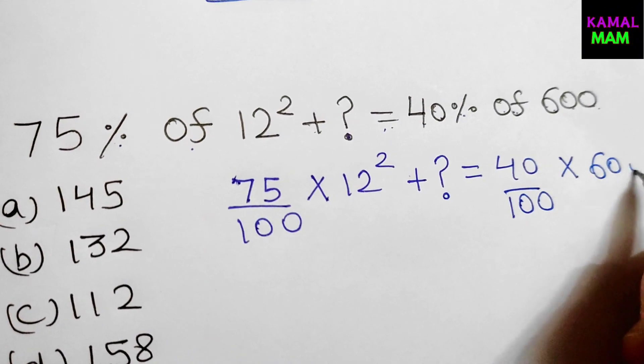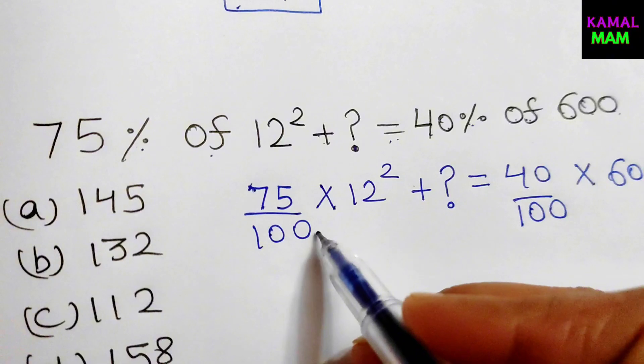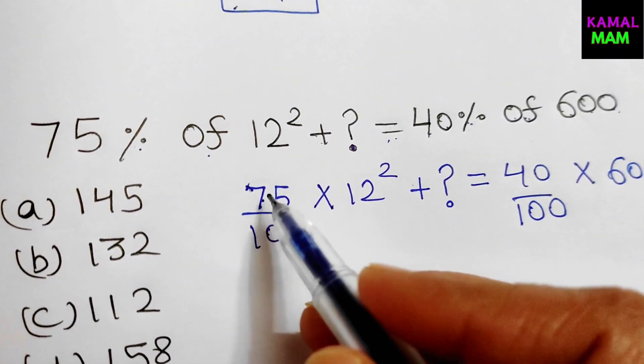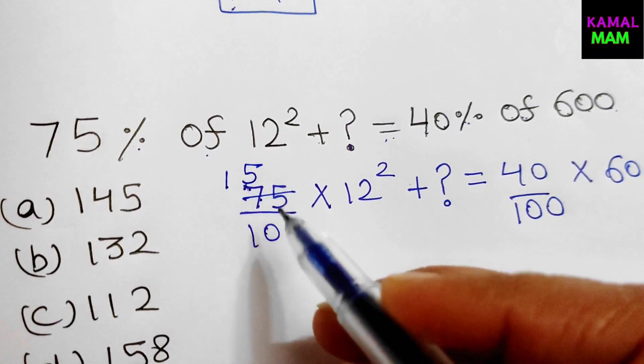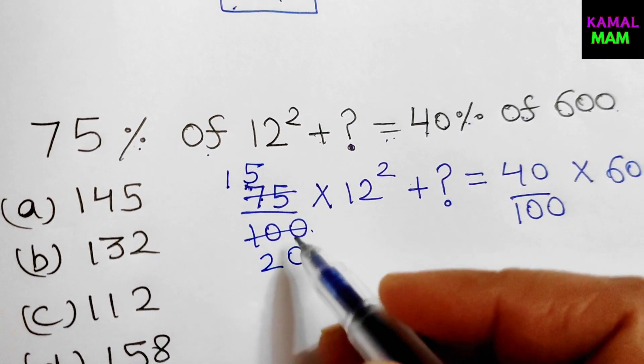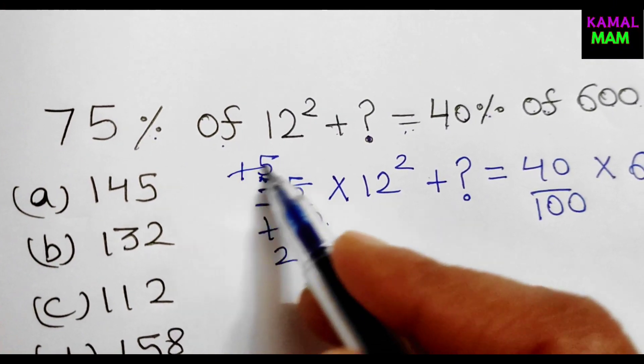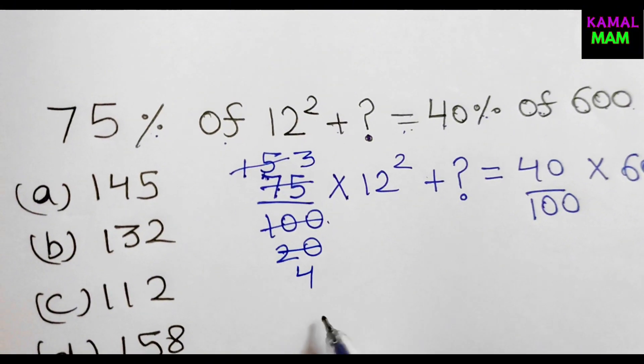So from here what we get is 75 by 100. It will go on table of 5. That is 5 ones of 5, 5 fives are 25, 5 twos are 10. And again it goes on the table of 5. 5 threes are 15, 5 fours are 20. So 3 by 4.